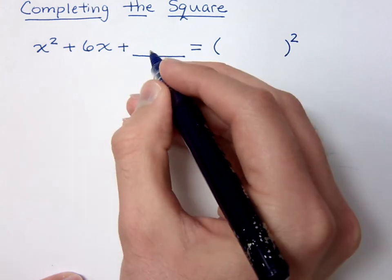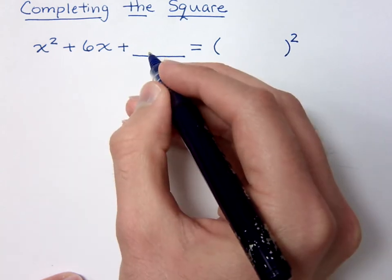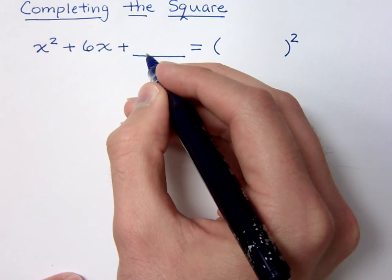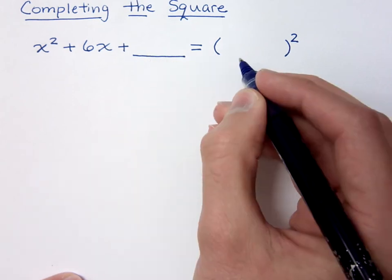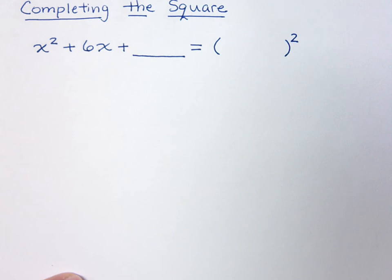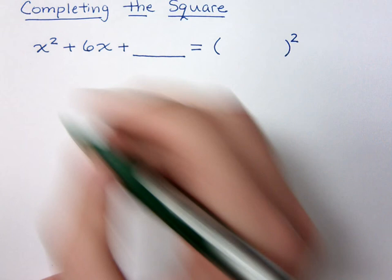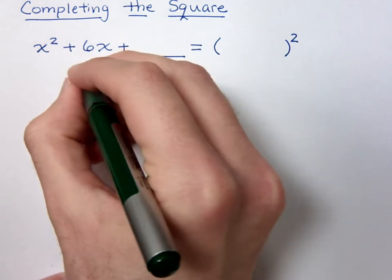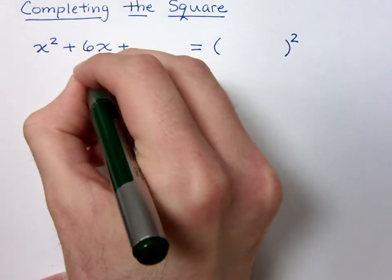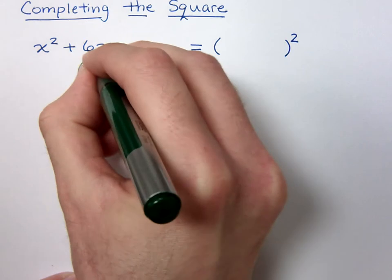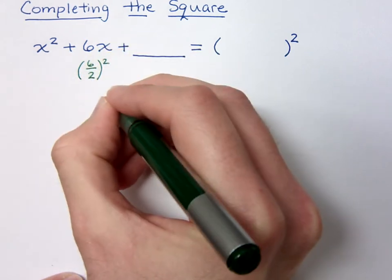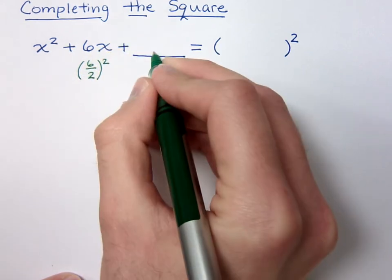Now, I could put an 8 here, and x squared plus 6x plus 8 would factor, but they wouldn't have the same two factors. The way that we can find this is almost like with a little song. You take this middle coefficient here of 6, you divide it by 2, and you square it. That's going to help you figure out the missing piece that goes here.